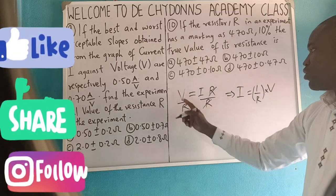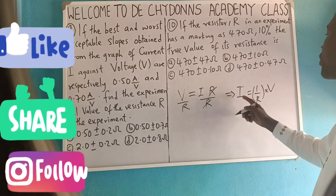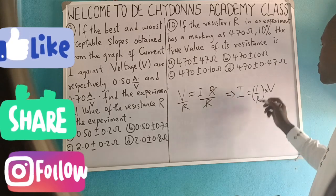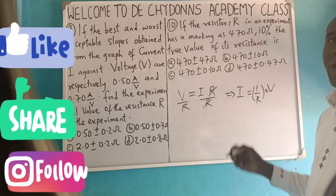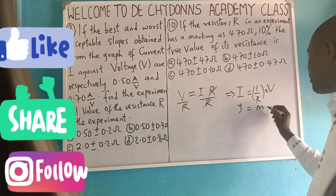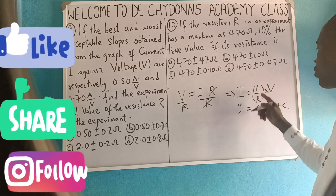Yes, because V over R means 1 over R times V. That means when you plot a graph of current against voltage, the slope will be equal to 1 over R. From Y equals MX plus C, the slope will be equal to 1 over R.